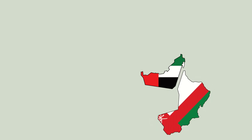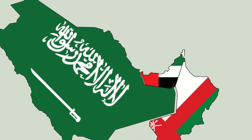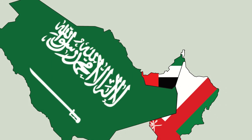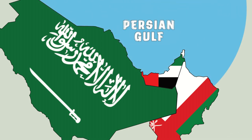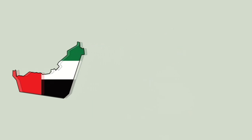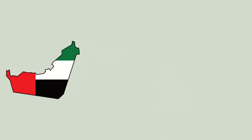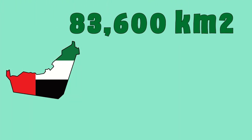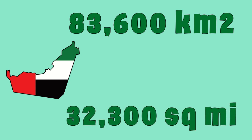The UAE borders Oman to the east and Saudi Arabia to the south and the west. It shares maritime borders in the Persian Gulf with Qatar and Iran. The territory of the UAE covers around 84,000 km² or roughly 32,000 square miles.